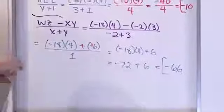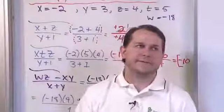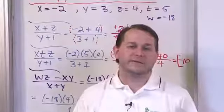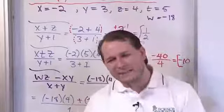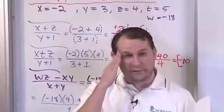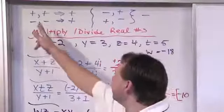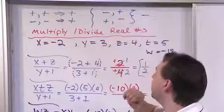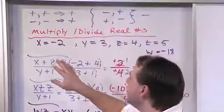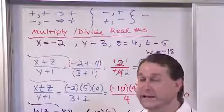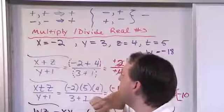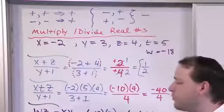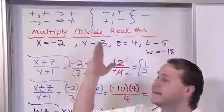That is really all for this section. You can see that there's less to multiplying and dividing real numbers than there is to adding and subtracting them. When you add and subtract, you have to look at absolute values and determining the sign is more involved. Here it's much easier. If both signs are positive, the answer is positive. If both are negative, the answer is positive. If they're different, no matter the ordering, it's always negative. Same signs give a positive result; different signs give a negative result.